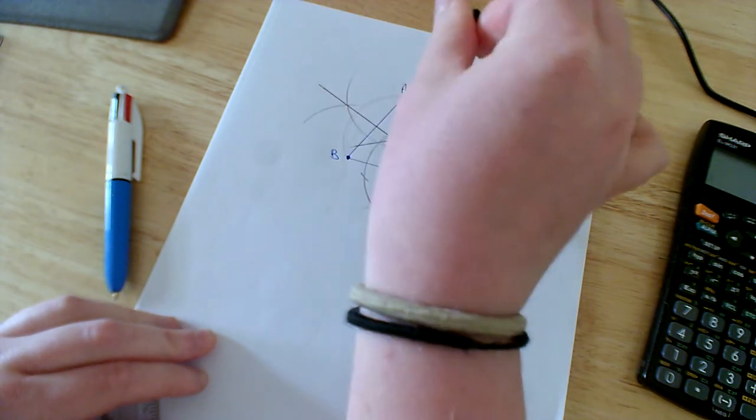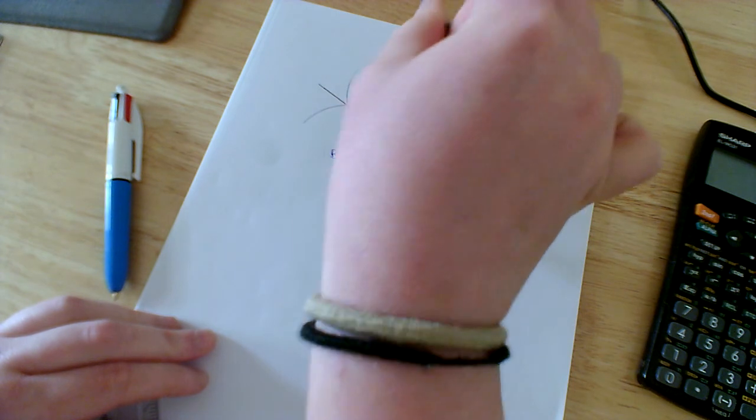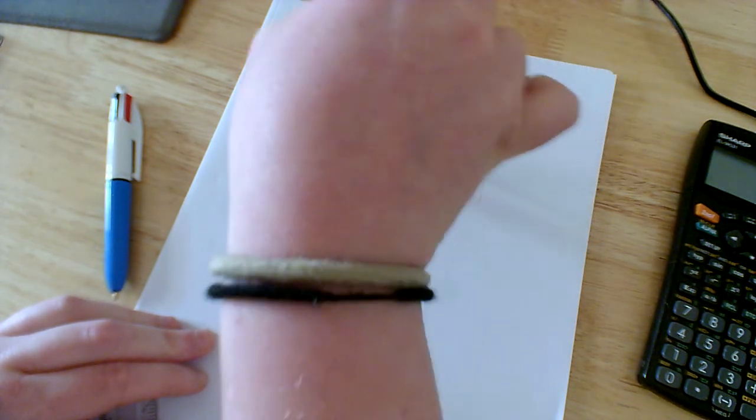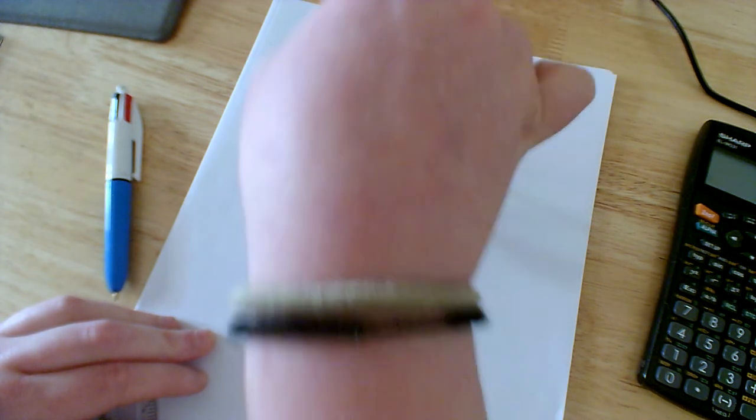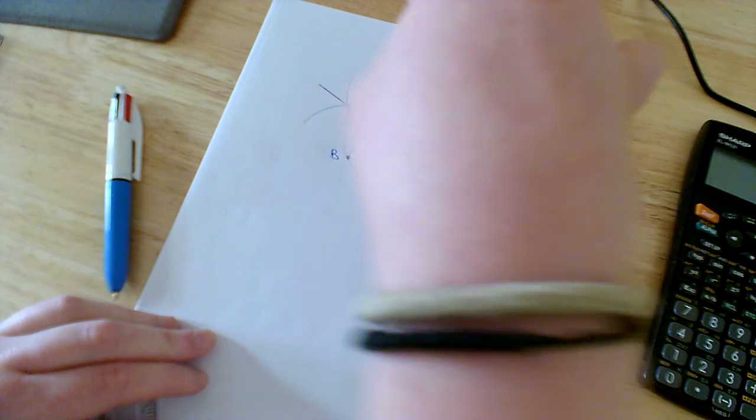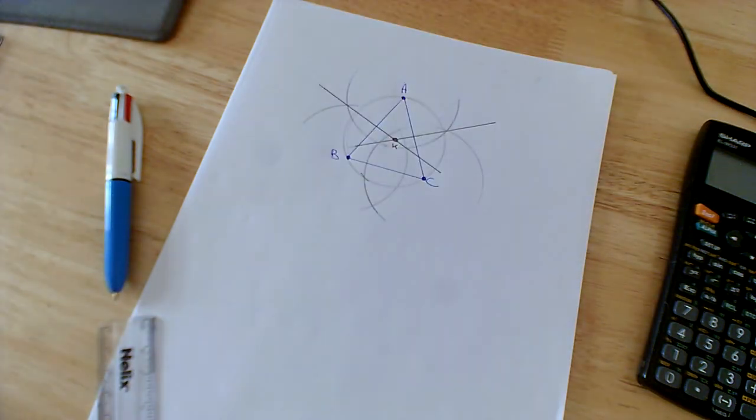As you can see, it's going through each point here. And that's my construction fully completed for the circumcircle.